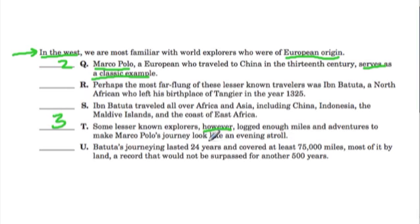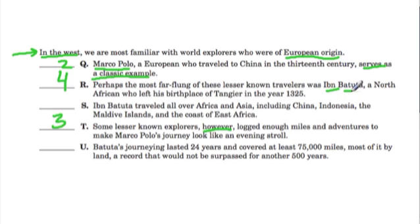Out of the three remaining sentences, only R makes sense to come next because it introduces a far-flung and lesser-known traveler named Ibn Battuta, a North African who left his birthplace of Tangier in the year 1325. This introduces the new character as our fourth sentence.